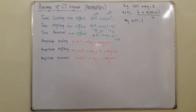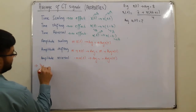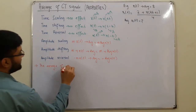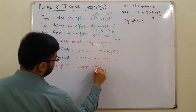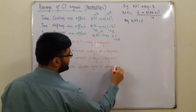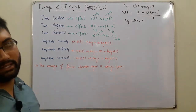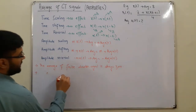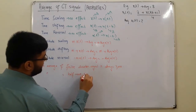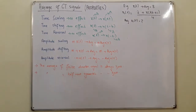Before solving the example, two more properties: the average of a finite-duration signal is always zero. A finite-duration signal exists only for a limited time interval, not throughout the entire time axis. Similarly, the average value of half-wave symmetric signals is always zero.